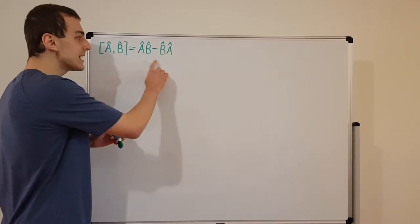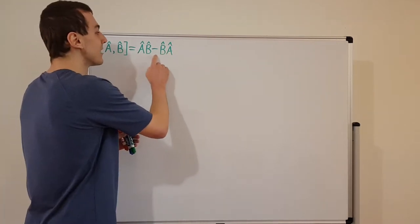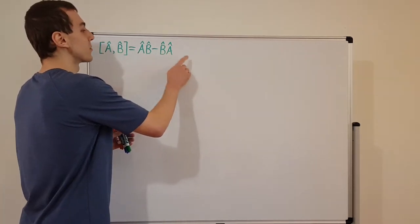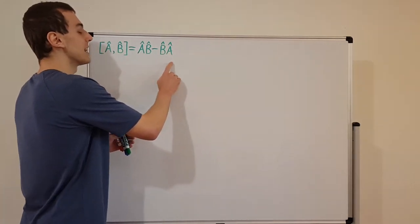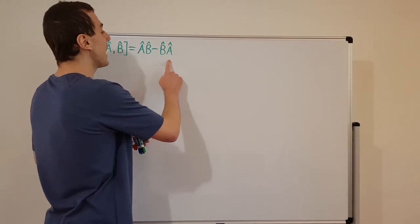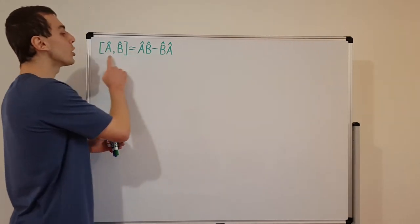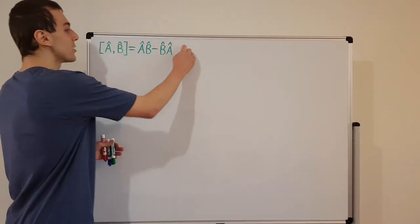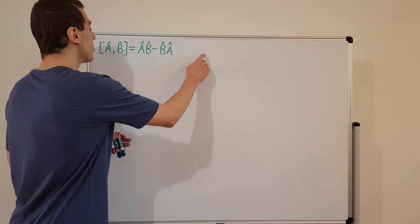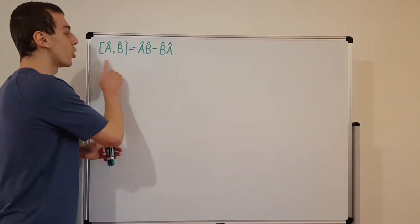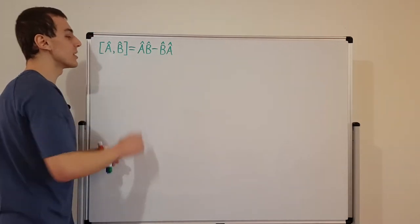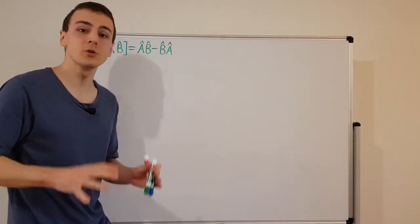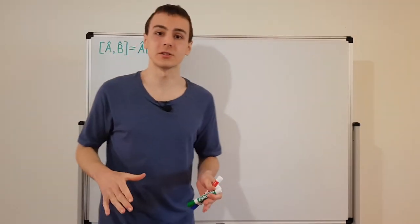If there is something that results from this difference, that means we have non-commuting operators. But if this turns out to be zero, then the commutator is zero — those are commuting operators.